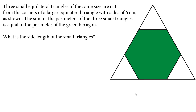Hi there. In this question, we will solve an 8th grade math olympiad question. Three small equilateral triangles of the same size are cut from the corners of a larger equilateral triangle with side lengths 6 cm as shown. The sum of the perimeters of the three small triangles is equal to the perimeter of the green hexagon. What is the side length of the small triangles?